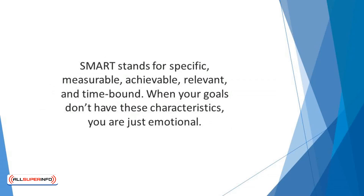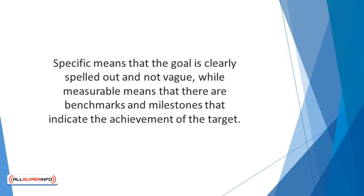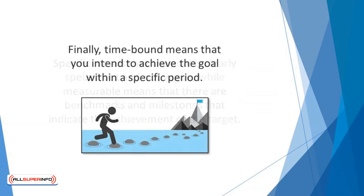When your goals don't have these characteristics, you are just emotional. Specific means that the goal is clearly spelled out and not vague, while Measurable means that there are benchmarks and milestones that indicate the achievement of the target. Achievable means that the goal is realistic, while Relevant means that the target is connected to meaningfulness. Finally, Time-bound means that you intend to achieve the goal within a specific period.